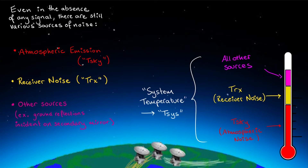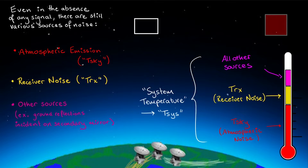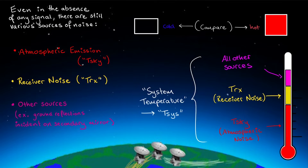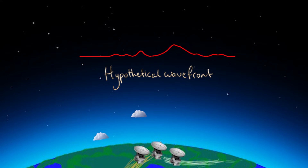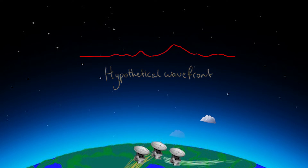We measure the system temperature by periodically comparing the signal from blank sky — that is, a position with no known signal close to the science target — with a signal of known temperature. The system temperature is measured every 10 to 20 minutes at lower frequencies with ALMA, and every few minutes at higher frequencies. In addition, the atmosphere can introduce phase offsets and amplitude variations, often called gain fluctuations, into the signal due to a variety of short-term and long-term processes.